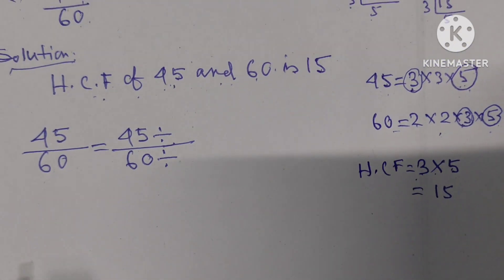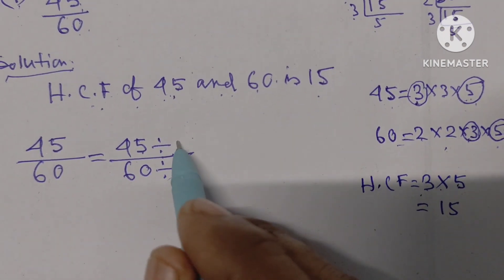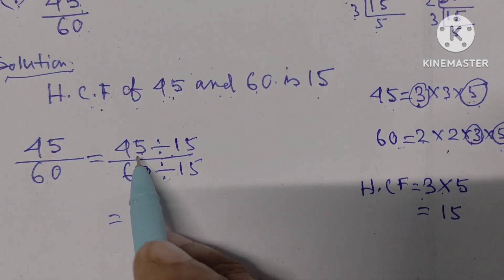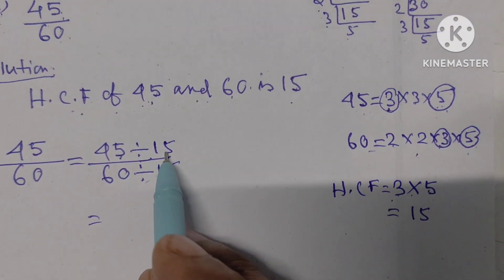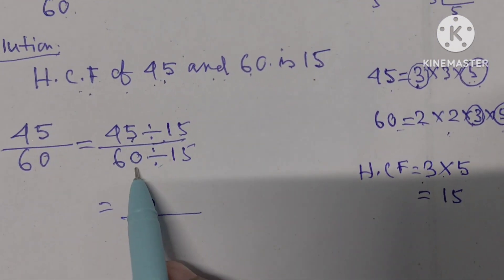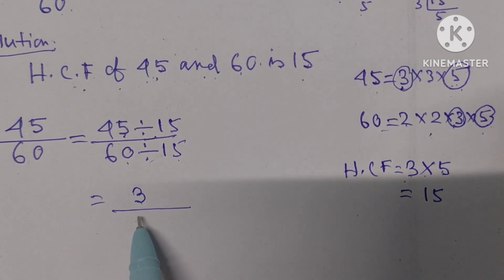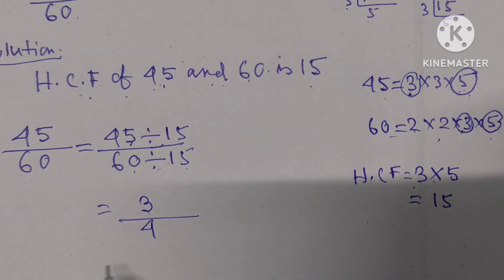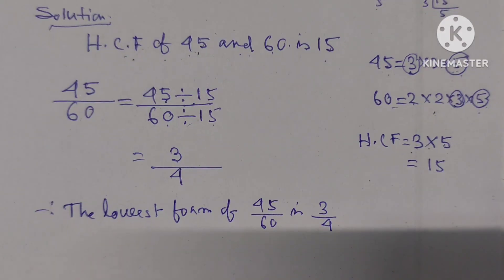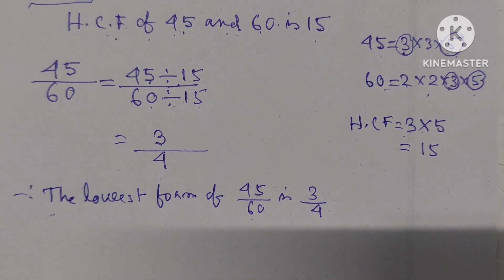We have to divide both the numerator and denominator by 15. If we divide 45 by 15, we get 3 — because 15 threes are 45. If we divide 60 by 15, we get 4 — because 15 fours are 60. Therefore, the lowest form of 45 by 60 is 3 by 4.